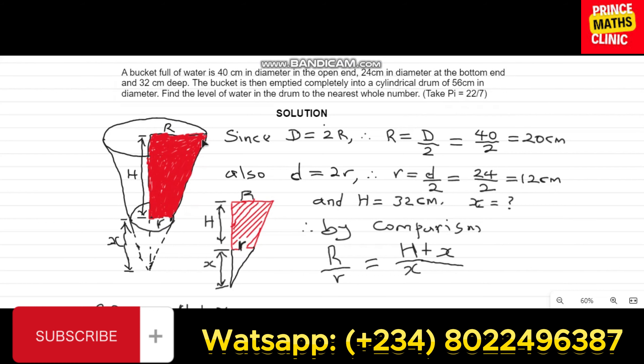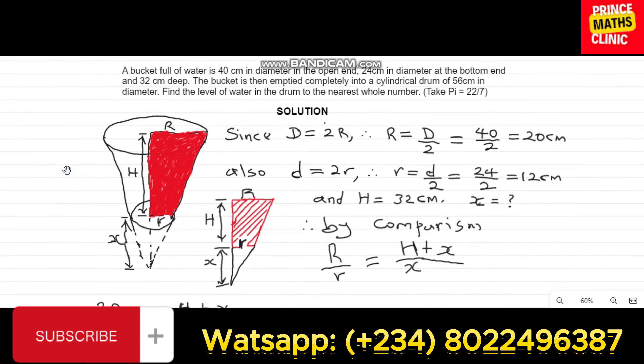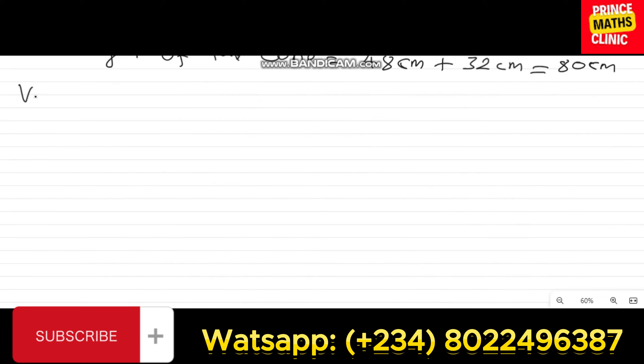To find the volume of the frustum, remember, the frustum is this part, this portion here, the upper portion. It means we have to find the volume of the entire cone and subtract the volume of this small cone from the volume of the entire cone in order to get the volume of this frustum. So, let's look at that. Therefore, volume of frustum is volume of the entire cone minus the volume of small cone.